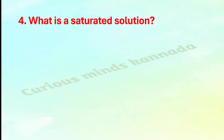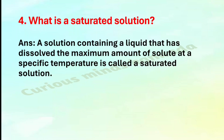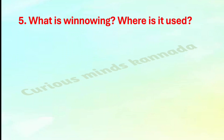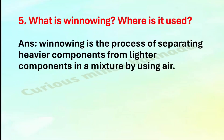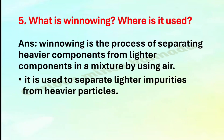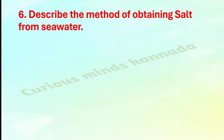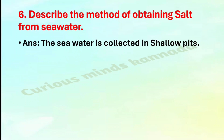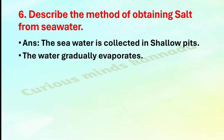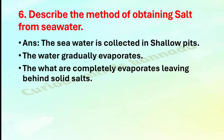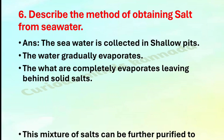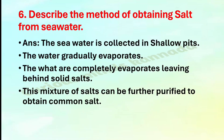Fourth: What is a saturated solution? Answer: A solution in which a liquid has dissolved the maximum amount of solute at a specific temperature is called a saturated solution. Fifth: What is winnowing? Where is it used? Answer: Winnowing is a process of separating heavier components from lighter components in a mixture by using air. It is used to separate lighter impurities from heavier particles. Sixth: Describe the method of obtaining salt from seawater. Answer: Seawater is collected in shallow pits; the water gradually evaporates, leaving behind solid salt. This mixture of salts can be further purified to obtain common salt.